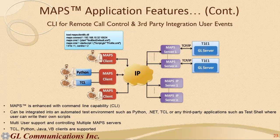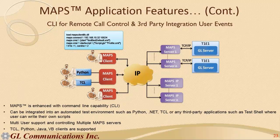This covers CLI functionality integration with MAPS. MAPS is enhanced with command-line capability, where it can be integrated into an automated test environment such as Python, .NET, TCL, or third-party applications such as TestShell. The user writes their own scripts to achieve this, and we support multi-user access with control over multiple MAPS servers. Supported clients include TCL, Python, Java, and VB clients, providing flexibility for different users to log in, access the same MAPS instance, and conduct their testing.